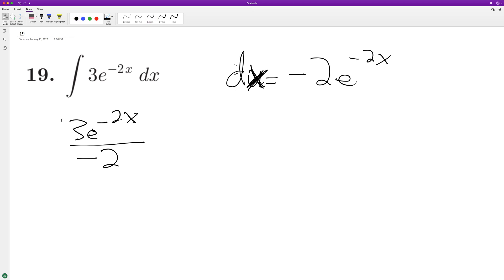Why do I have a negative 3 here? And then plus c. So negative 3e raised to negative 2x over 2 plus c. That's the final integral.